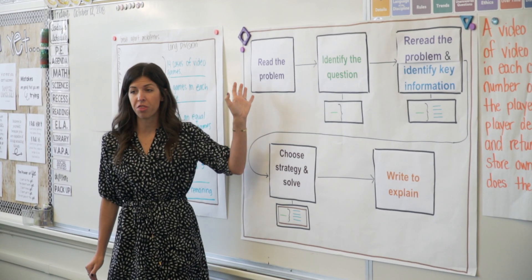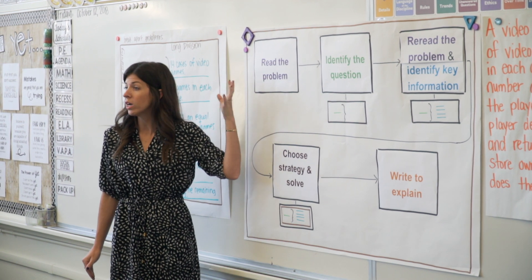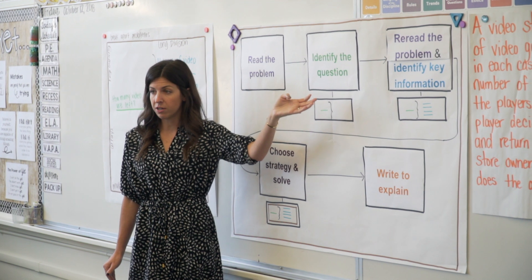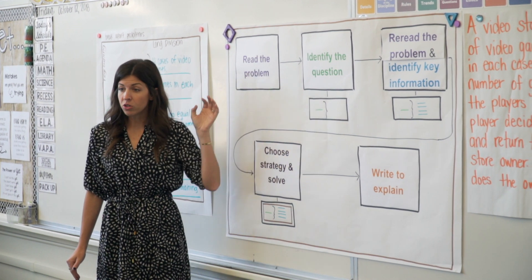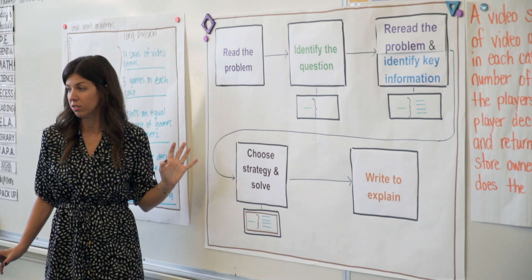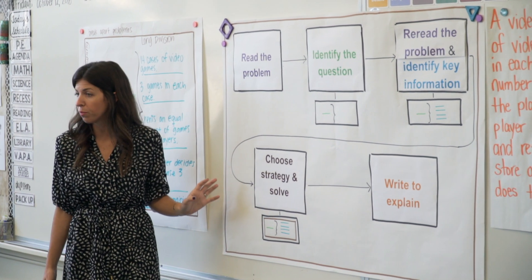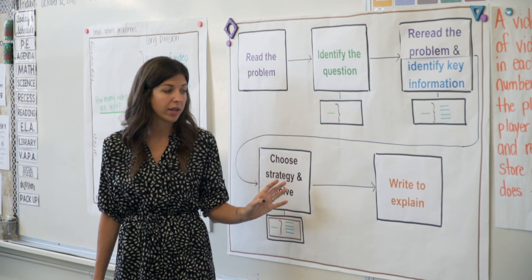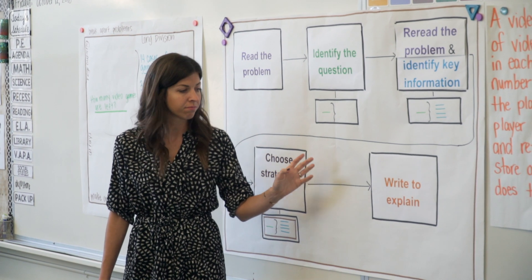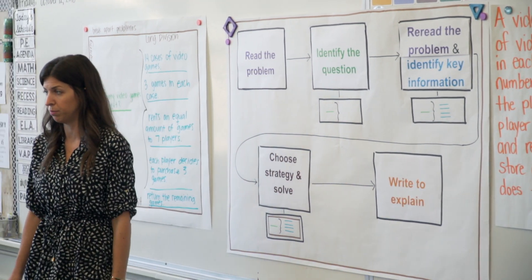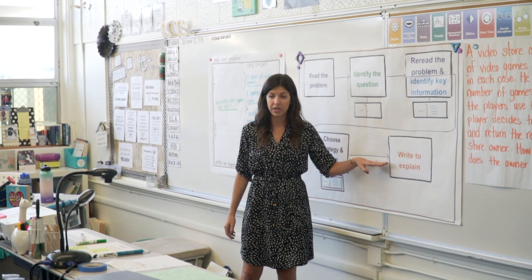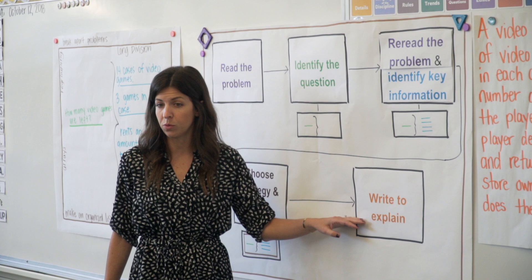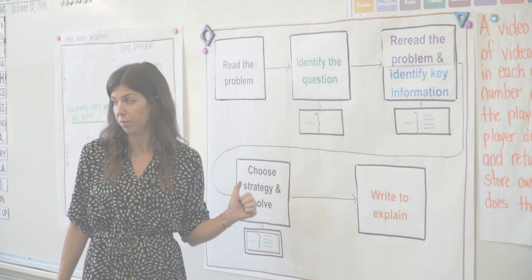So we started with our thinking — we thought through what are they asking us, what was the question, what was the key information. Then you were able to do the action — all the doing stuff, you solved the problem, figured out what strategy you needed. And now we critiqued other students and we're going to write to explain. When I give you the signal, go to your Google Classroom and answer the write-to-explain question for this problem.